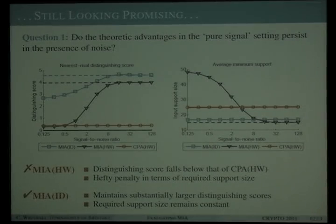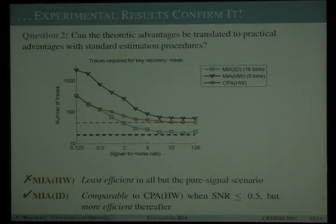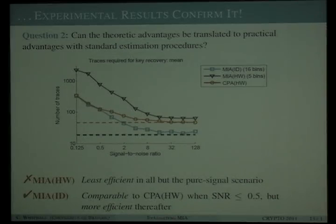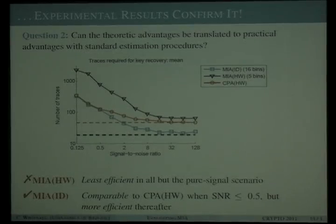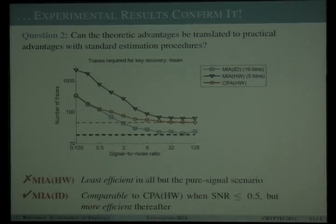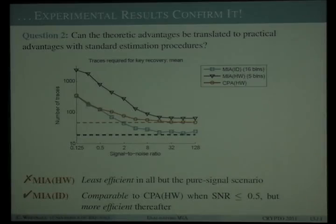To test the distinguishers in practical attacks against simulated traces, we use the sample correlation coefficient and histogram estimation of the densities via heuristics suggested in the MIA literature, fixing the number of bins as the cardinality of the power model image. The five-bin MIA estimator with the Hamming weight model is unable to rival correlation DPA even in noise settings where it does have a theoretic advantage. However, the 16-bin estimator with the identity power model does display greater trace efficiency than the correlation distinguisher — evidence that theoretic advantages can be translated into practical advantages under the right circumstances and with the right estimator.